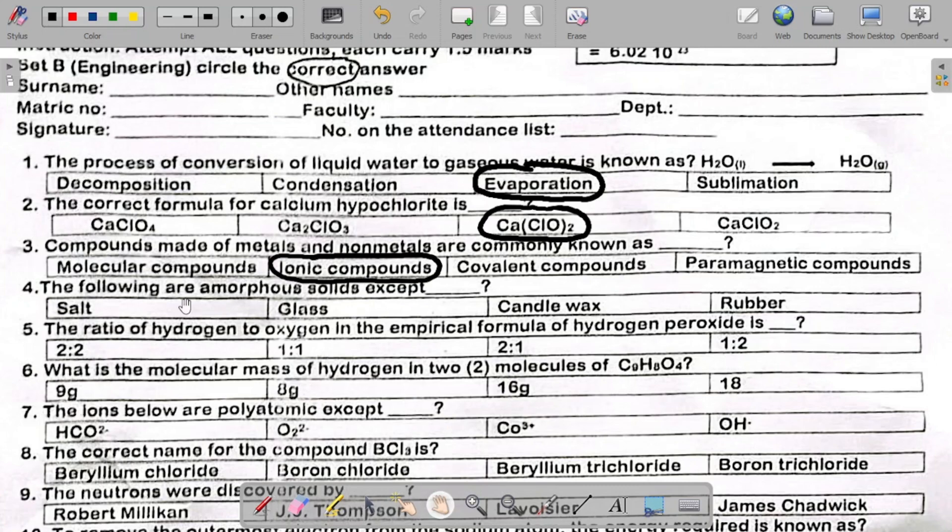Number four says the following are amorphous solids except. Now when we say amorphous solid, they are solids that lack definition in shape, pattern, and long-range order. They are the opposite of crystalline solids. Crystalline solids are actually solids that have a definite shape and definite pattern, but amorphous solids are those solids that do not have a definite shape or definite pattern.